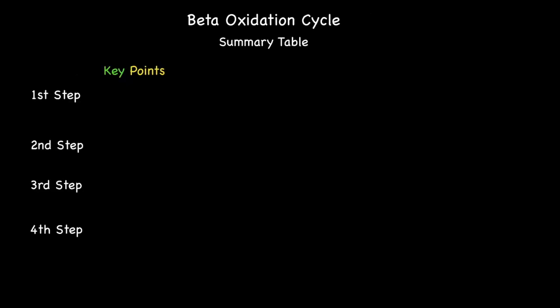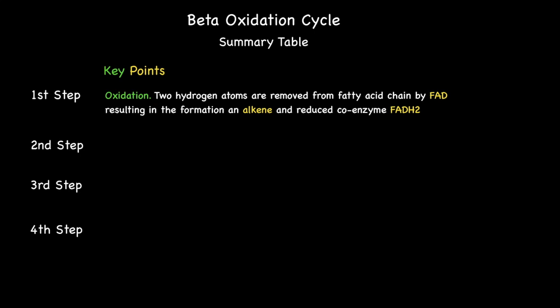In addition, here is a summary table of the key points from each step of each beta oxidation cycle. During step one we have oxidation in which two hydrogens are removed from the fatty acid chain by FAD. This results in the production of an alkene and a reduced coenzyme FADH2. During step two we have a hydration reaction in which water is added across the double bond resulting in the production of a secondary alcohol.